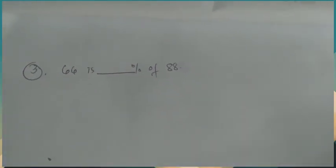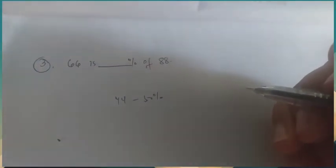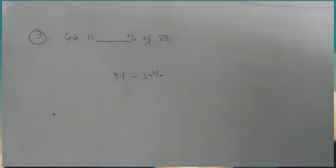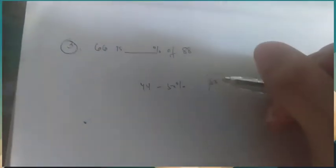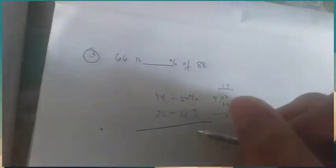Number 3: 66 is blank percent of 88. What is half of 88? 44, which is 50%. What is 25% of 88? Divided by 4, that's 22. So 44 plus 22 equals 66. That means 66 is 75% of 88.